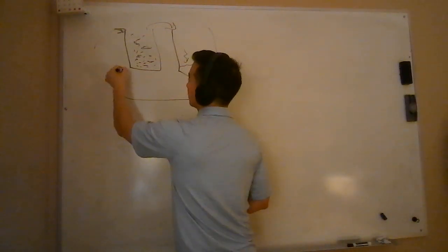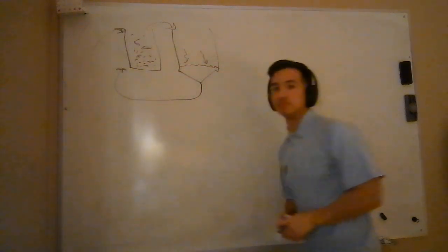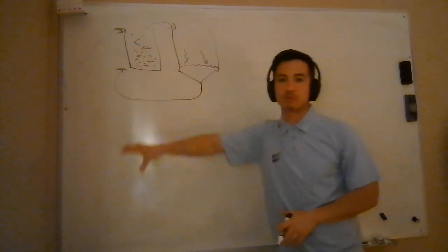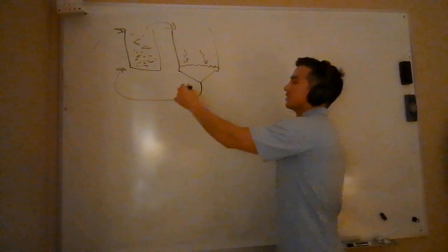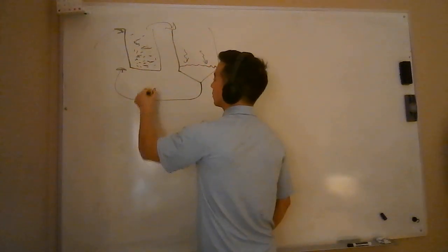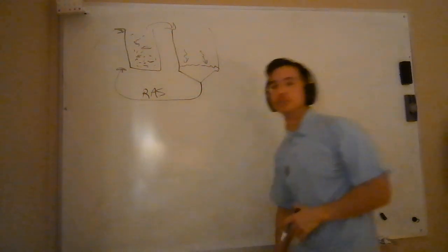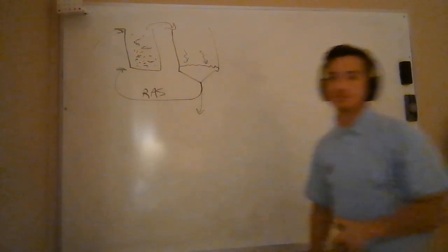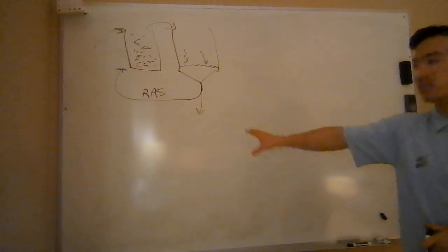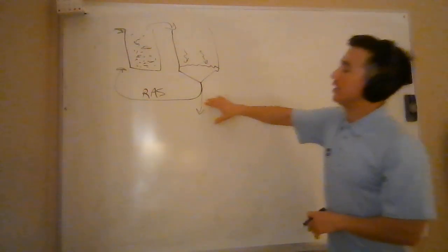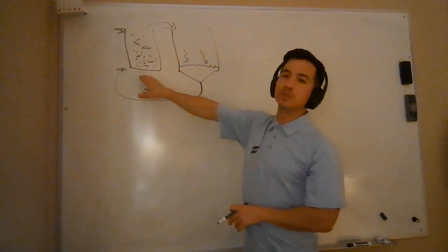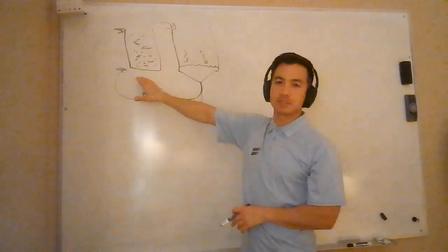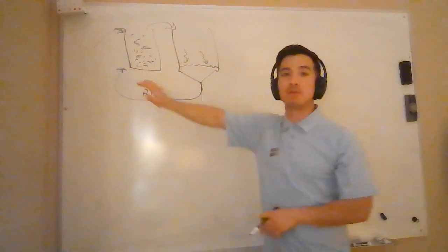Remember that some of that sludge is going to be returned back to our aeration basin. Keep those microorganisms around, keep them happy. This is our quote-unquote RAS, our return activated sludge. Sometimes you'll hear microbial seed. Some of this then gets wasted off for use for other purposes. Nowadays a lot of times turned into compost. So if you can imagine in this aeration basin we've got a bunch of microorganisms. We're feeding them food. We need to keep them happy.